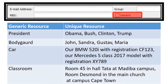A generic resource is something broad — it's a generic name, like 'President.' That is a generic name. A unique resource is more specific: President Obama, President Bush, President Trump. That is a unique resource — a specific individual within that generic category.